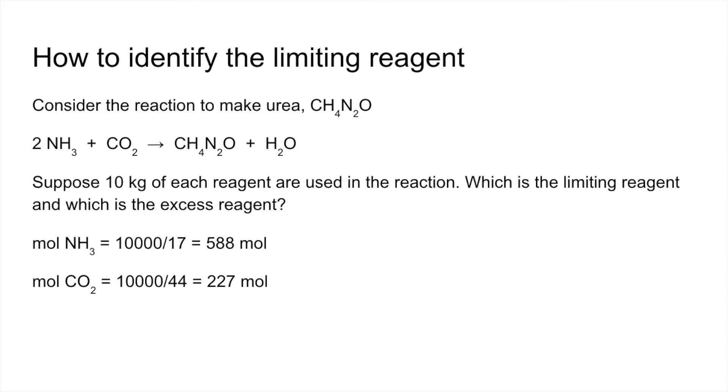So we'll bring the mole ratio into play now. So those 588 moles of ammonia can make half as many moles of urea. The 227 moles of CO2 can make the same number of moles of urea. So you'll notice that the carbon dioxide is only able to make 227 moles. So that's the limiting reagent. So the limiting reagent has the potential to make the fewest moles of product.